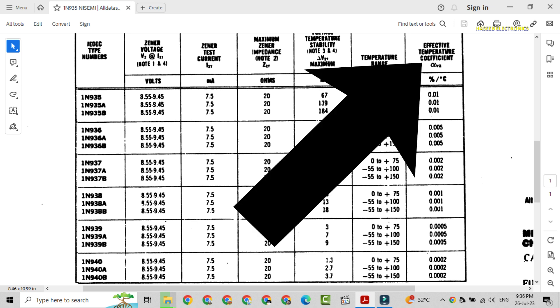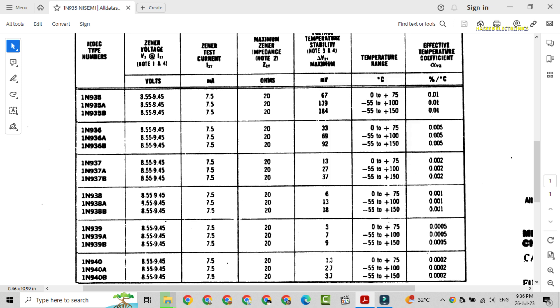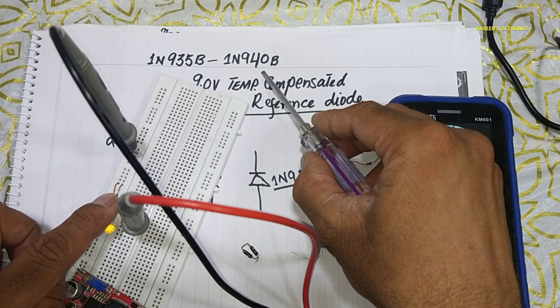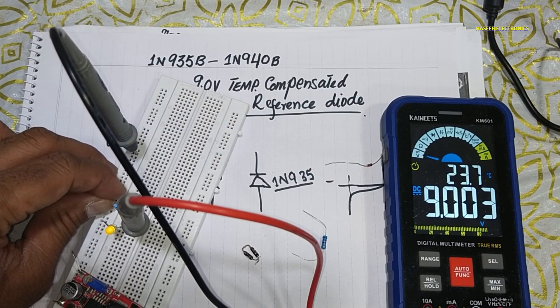Just the temperature coefficient difference. Every higher number has best tolerance. 1N940 has the best temperature tolerance.